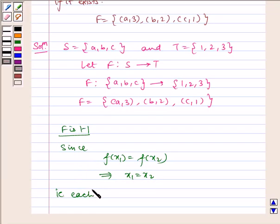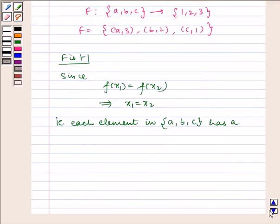each element of {a, b, c} has a unique image in {1, 2, 3}. Therefore, f is one-to-one.